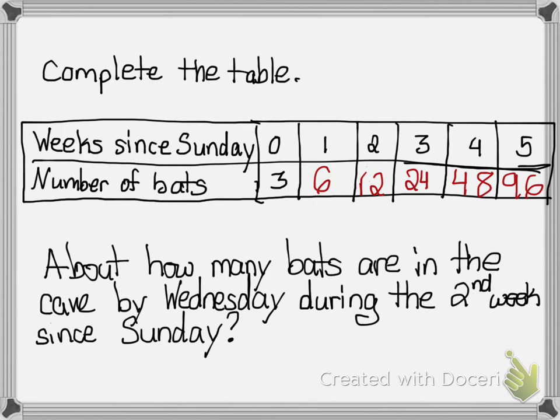So about how many bats are in the cave by Wednesday during the second week since Sunday? Now wait a minute — we're technically looking in between these two right here. We know that by the second week we have 12 on that Sunday. But then when we get to Wednesday, it's about halfway through before we get to 24. So we can guesstimate an amount that's in between 12 and 24. I'm just going to guess approximately 18.